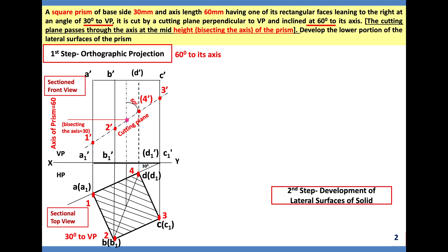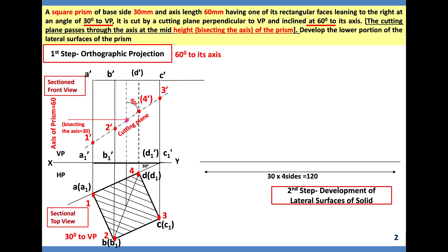Second step: development of the lateral surface of the square prism. Take the help of XY and draw a horizontal line. It is a square prism with four sides, each of side size 30 mm, so 30 × 4 = 120 mm total. Then take the height — extend it — the height is equal to the prism height which is 60 mm. Draw a vertical line. Note that both the front view and the development are done with projection lines (thin lines) — this is strictly required, as you will understand at the end of the problem.